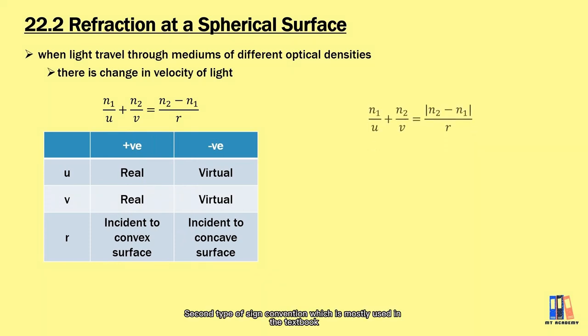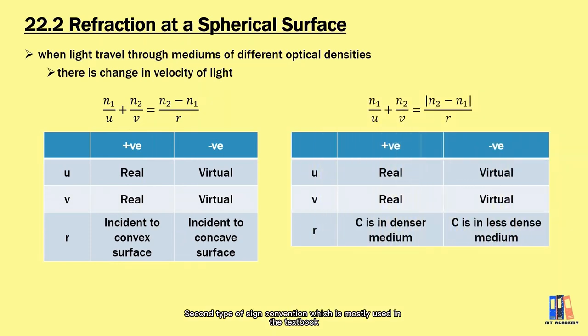The second type of sign convention, which is mostly used in textbooks, especially in Plungy and Oxford, depends on the location of the center of curvature, and this would adjust the formula a little bit different than the previous one such that the absolute value of n2 minus n1 is applied in the formula.